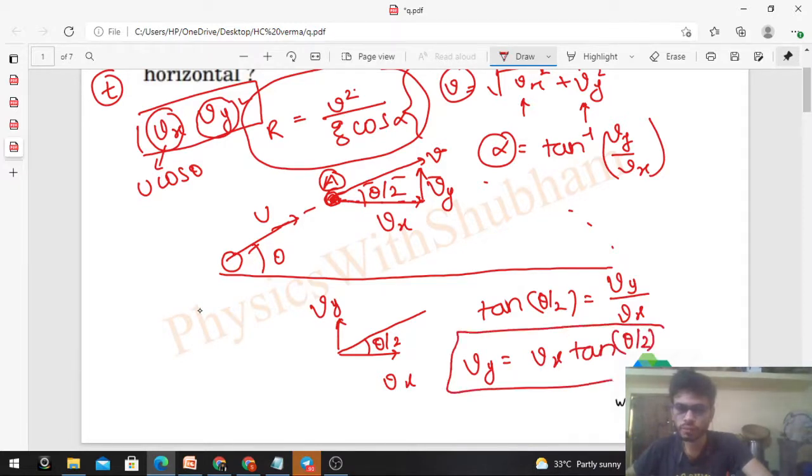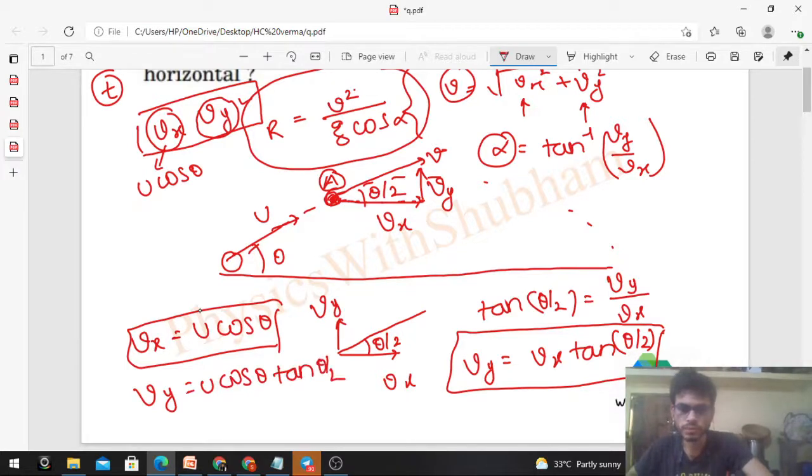vx is the horizontal component of velocity which doesn't change, so u cos θ × tan(θ/2). Now we have everything. What to calculate first?